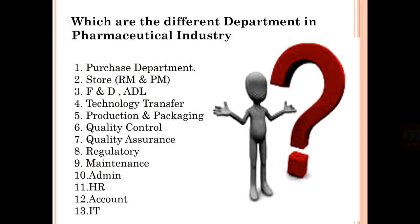Which are the different departments in the pharmaceutical industry? This is a very important point, as everyone needs to know which department to join when entering pharma. The departments include: purchase, store (RM and PM), F&D, ADL, technology transfer, production and packaging, quality control, quality assurance, regulatory affairs, maintenance, admin, HR, accounts, and IT — totaling 13 different departments.